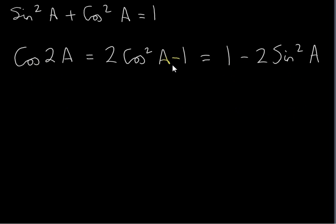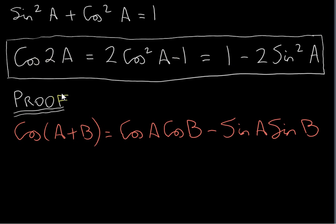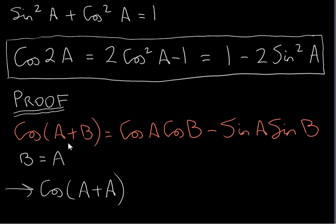Now let's prove the double angle identity. We're going to prove that cos(2A) = 2cos²A − 1, or equivalently cos(2A) = 1 − 2sin²A. To prove this, we use the compound angle identity. How do we get cos(2A) from cos(A + B)? We just replace B with A. An identity is true for any angles A and B, so we can make B equal to A. Then cos(A + B) becomes cos(A + A), which is cos(2A).